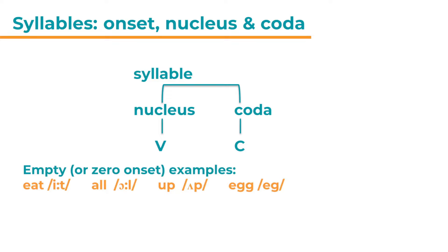Here are some examples for empty or zero onset. For example, eat, all, up, egg. Now these all form words on their own, but obviously they don't have to form words. They could also just be syllables. But what you can see is they all start with a vowel sound.